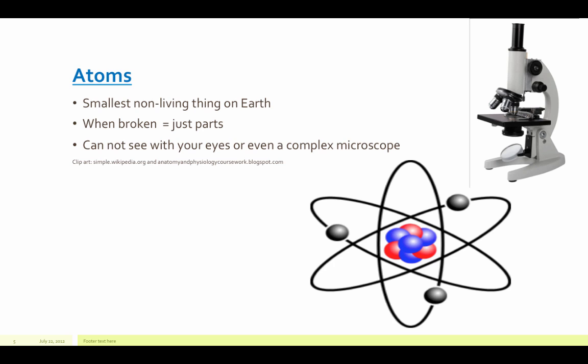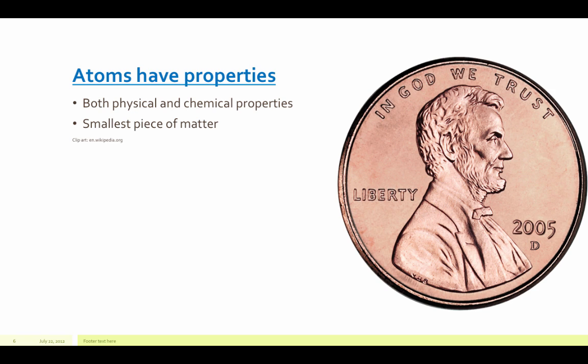Atoms also can't be seen with your eyes or even a complex microscope. I don't have one at school that I could use to show you an atom. Maybe when you go to college, you'll be able to find one. All atoms have properties, both physical and chemical properties. And that's why I tormented you in unit two and three with those. It is the smallest piece of matter that still has those physical and chemical properties.